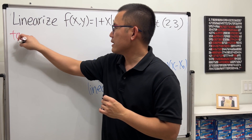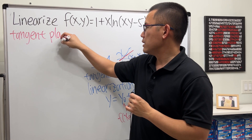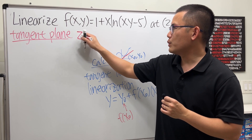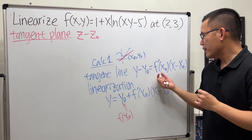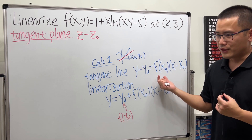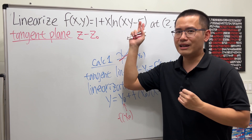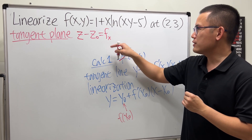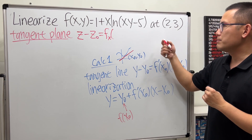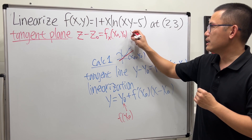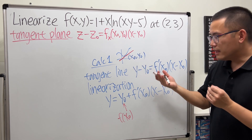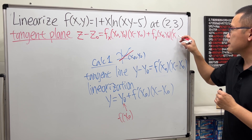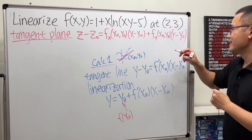Here is the equation for the tangent plane. Instead of y, we will have z. So we start with z − z0, and instead of just differentiating with respect to x, in Calc 3 we also have y, so we use the partial derivative. This equals f_x(x0, y0) · (x − x0) plus f_y(x0, y0) · (y − y0).